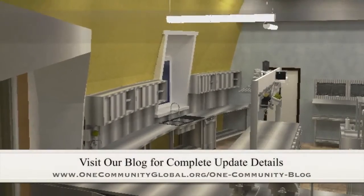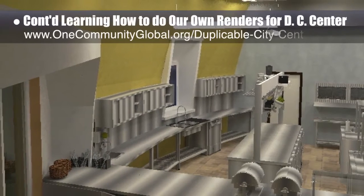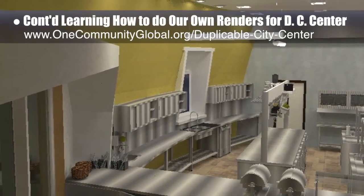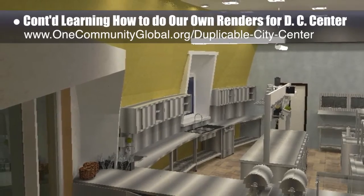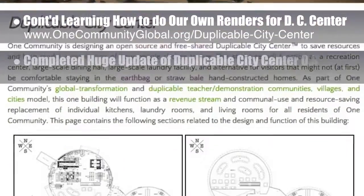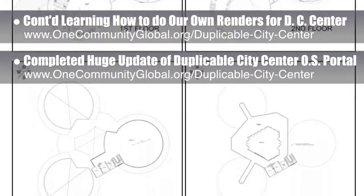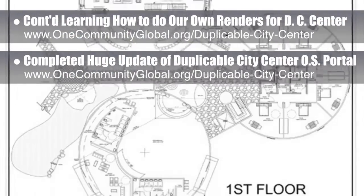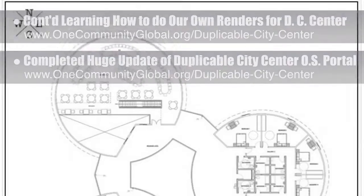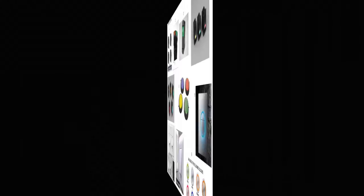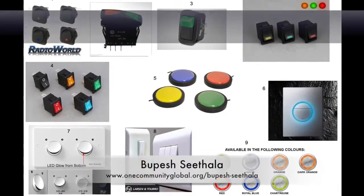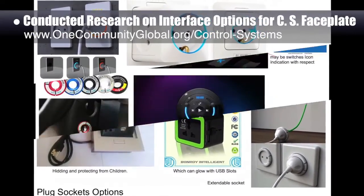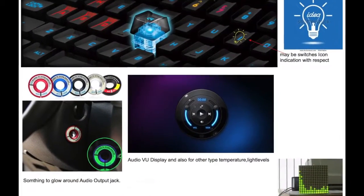This week the core team continued the process of learning how to do our own renders for the duplicable city center, returning to the kitchen with more focus on lights, windows, and materials. The core team also completed a huge update of the duplicable city center open source portal, improving formatting and adding updated floor plan exports from AutoCAD — all with clickable and enlargeable images. Bupesh Sithala, interior designer, also researched different interface options for the control system's faceplate that will be built into the visitor room's pallet furniture beds.